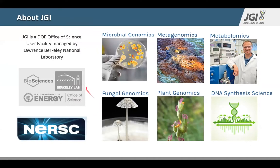JGI is a DOE Office of Science user facility managed by Lawrence Berkeley National Laboratory. We promote omic-driven science wherein we enable access to large-scale genomics. We have several different programs to support the different sciences, including microbial genomics, metagenomics, metabolomics, and so on. We also work in close collaboration with NERSC, which provides supercomputing access to facilitate high-throughput analysis in all of these different fields and programs.